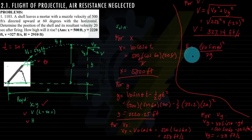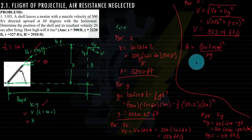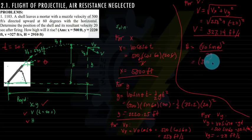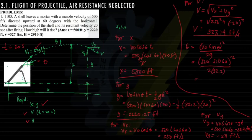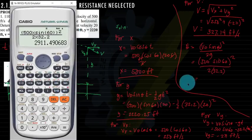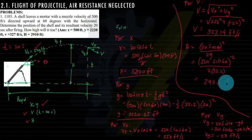For maximum height h: h equals (v sub o sine theta) squared over 2g, so h equals (500 times sine 60°) squared divided by (2 times 32.2). This gives h equals 2911.5 feet. We are done with the first problem.